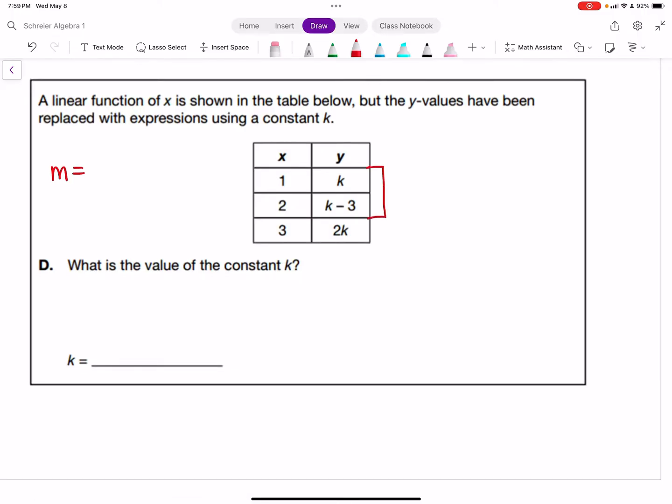Using the first two points: (k - 3 - k)/(2 - 1). k minus k cancels, so we get -3/1 = -3. So the slope is -3. But that's not k. What I can do now is write another expression for slope using these two points and set it equal to -3. Taking 2k minus (k - 3), which becomes -k + 3.